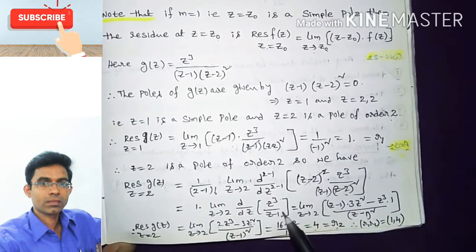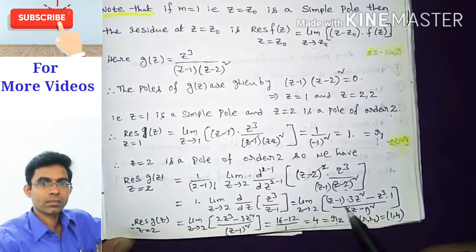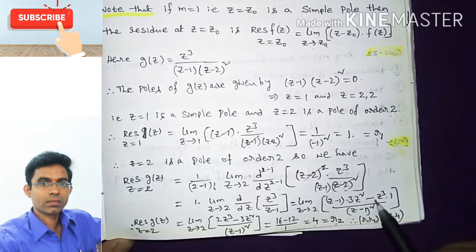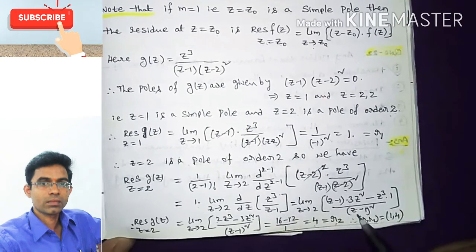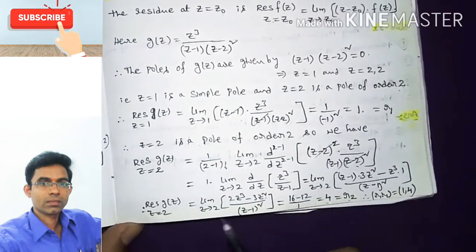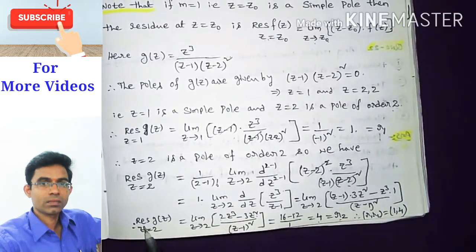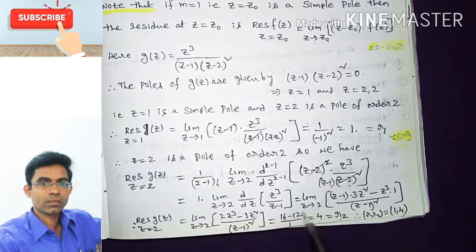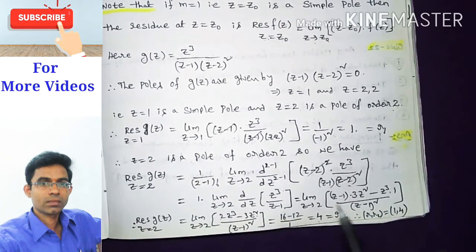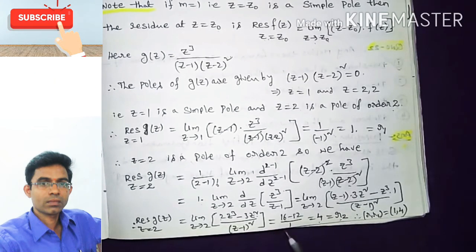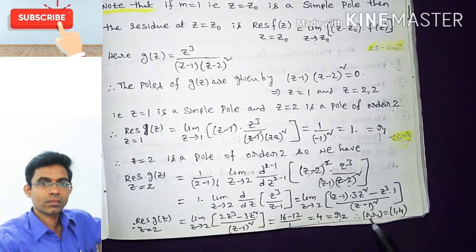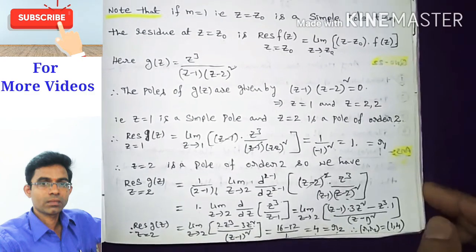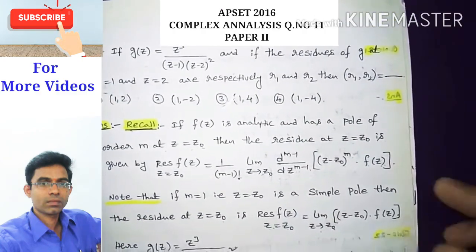Applying the quotient rule gives: [3z²(z-1) - z³] / (z-1)² = (2z³ - 3z²) / (z-1)². Taking the limit as z tends to 2: (2·8 - 3·4) / (2-1)² = (16 - 12) / 1 = 4. So r2 = 4. Therefore the pair (r1, r2) = (1, 4), which means option 3 is correct.